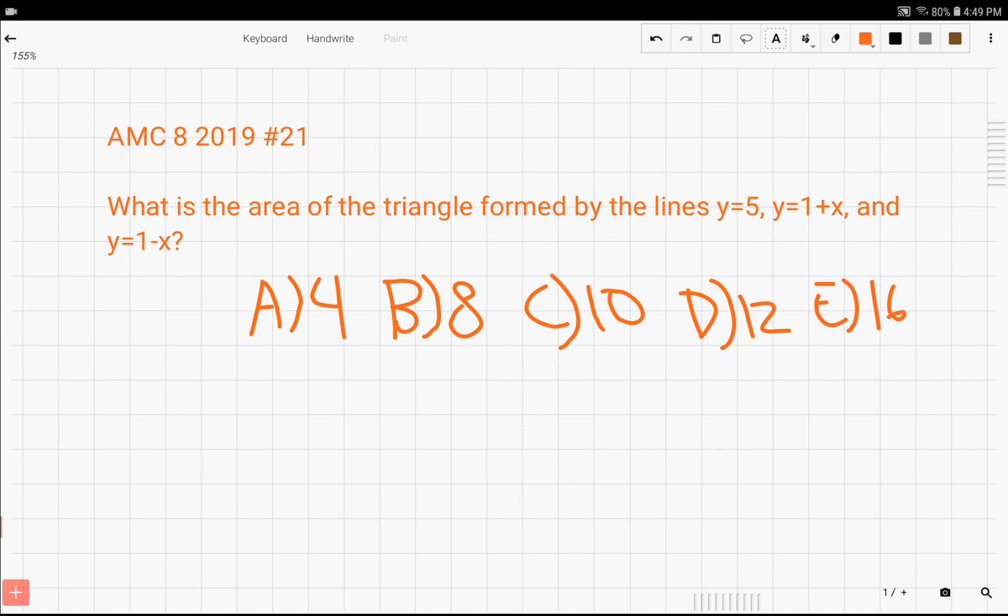The problem asks, what is the area of the triangle formed by the lines y equals 5, y equals 1 plus x, and y equals 1 minus x?